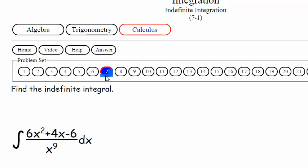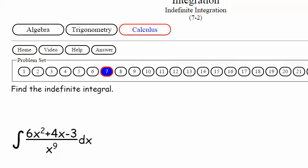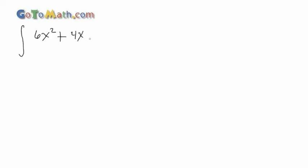The integral is 6x squared plus 4x minus 3 over x to the ninth dx. All right, we got that written down? If not, you'll get a second chance here. I noticed the difference between this problem and 7-1 is how the answer is written.